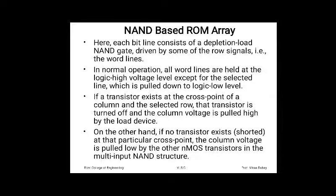On the other hand, if no transistor exists at a particular cross point, the column voltage is pulled low by the other NMOS transistors in the multi-input NAND structure. So if no cross point transistor exists, the other transistors in the same column pull the output voltage down.